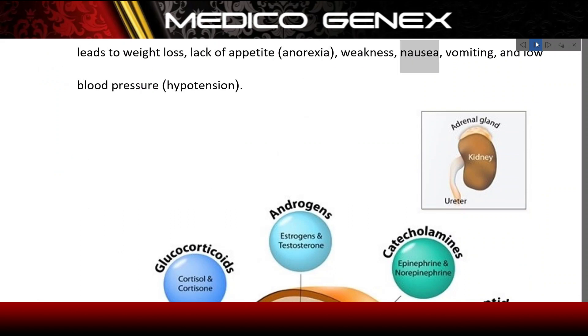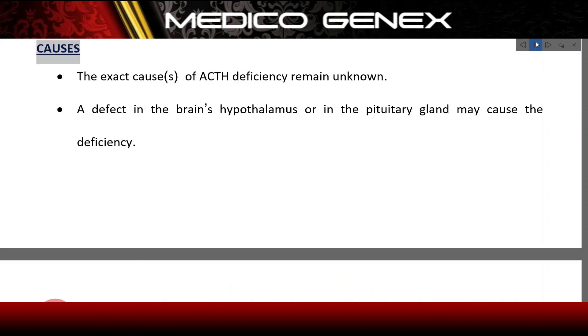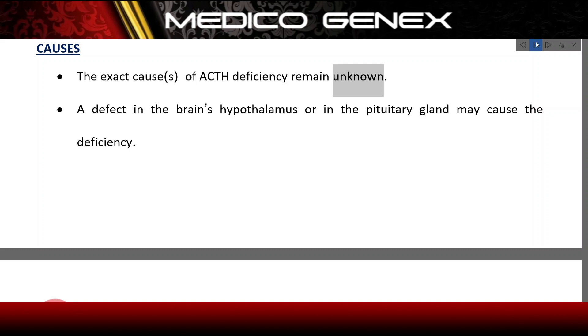Further symptoms of adrenal insufficiency include nausea, vomiting, and low blood pressure (hypotension). The exact causes of ACTH deficiency remain unknown.